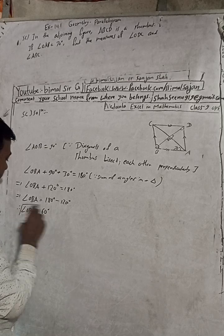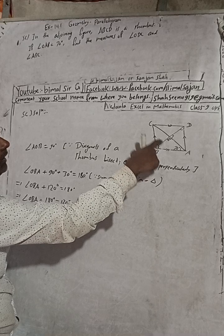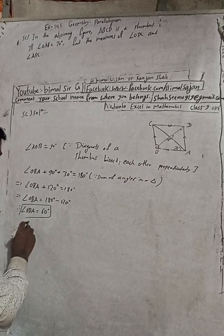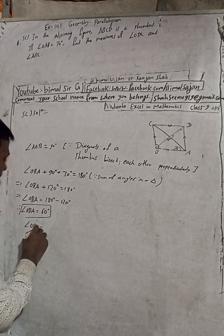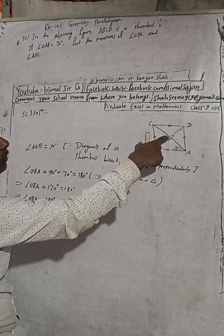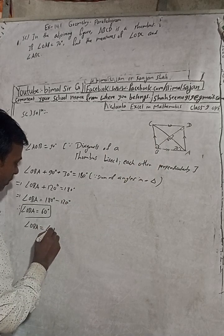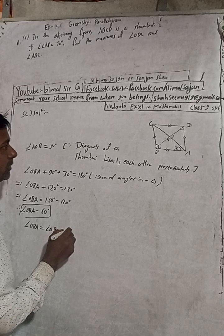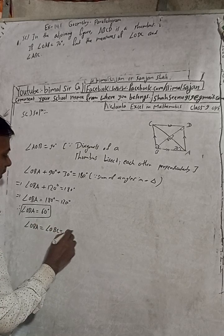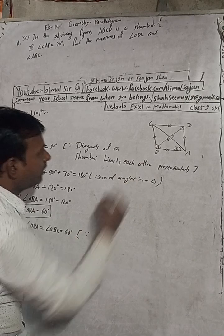I got this 60 degrees. So angle OBA is equal to angle OBC — both are 60 degrees. The reason is: diagonals of a rhombus bisect the vertex angle through which they pass.